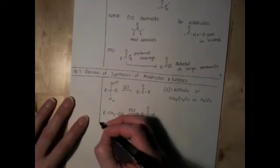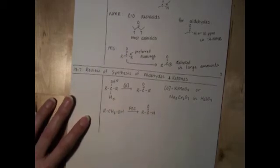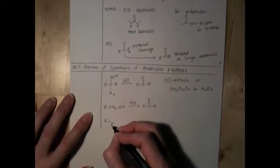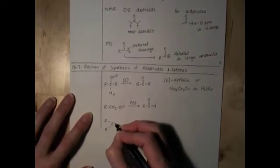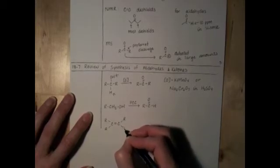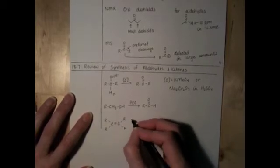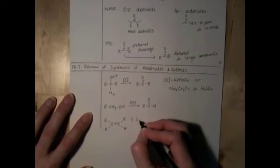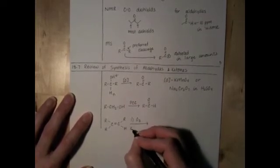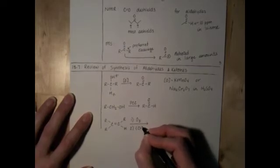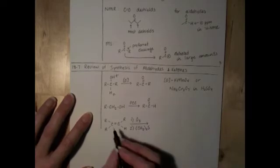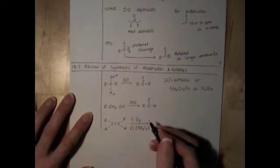We also looked at the ozonolysis of alkenes. Depending on the substitution of the alkene, depending on what kind of R groups are attached to the carbons that are in the alkene, you're going to end up with either aldehydes or ketones. Remember, this is a two-step reaction. First, we use ozone and then follow that up with dimethyl sulfide. And we just cleave at the carbon-carbon double bond.